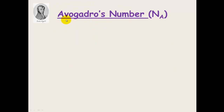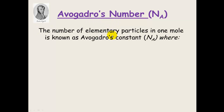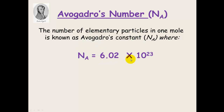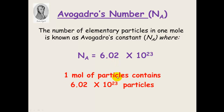Avogadro was the scientist who came up with all of this, and he is so famous that he gets his own number that we use all the time. Avogadro's constant is the number of elementary particles in one mole, equal to 6.02×10²³. One mole of particles contains 6.02×10²³ particles, and it doesn't matter what type of particle it is — one mole always has 6.02×10²³ of those particles.